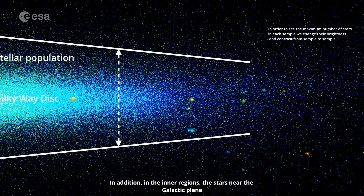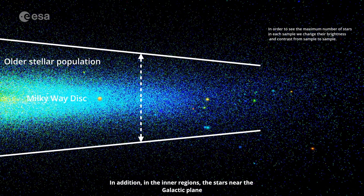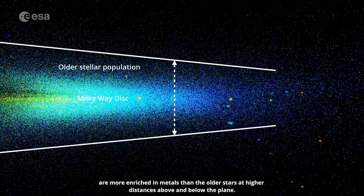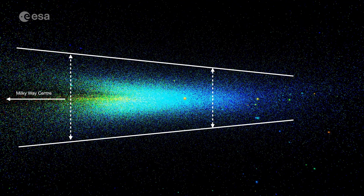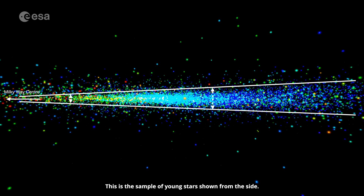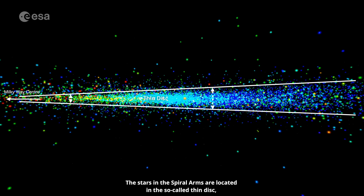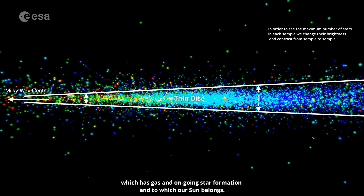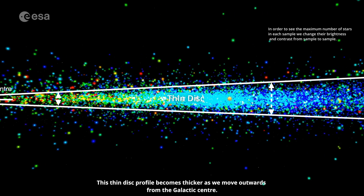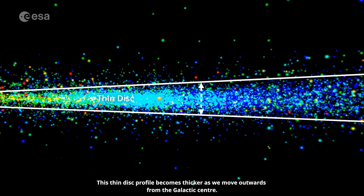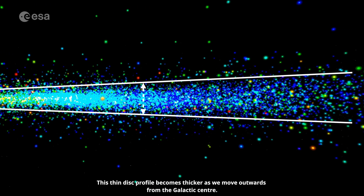In addition, in the inner regions, the stars near the galactic plane are more enriched in metals than the older stars at higher distances above and below the plane. This is the sample of young stars, shown from the side. The stars in the spiral arms are located in the so-called thin disk, which has gas and ongoing star formation, and to which our sun belongs. This thin disk profile becomes thicker as we move outwards from the galactic centre.